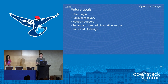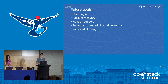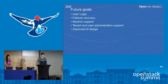Some things we're looking to do in the future: user login so anyone can log into their OpenStack cloud from the app; failover recovery so losing phone power or connection doesn't damage your cloud; Neutron support to create networks and attach servers to routers; tenant and user administration so you can add users and assign them to tenants on the go; and improved UI design — we're not UI designers, but we're working on it.